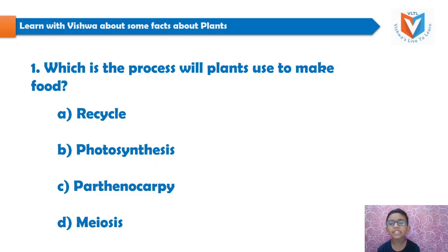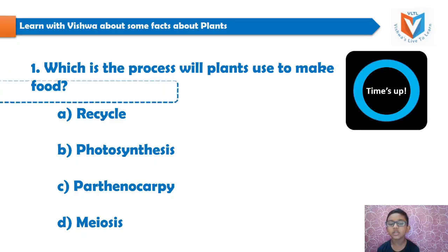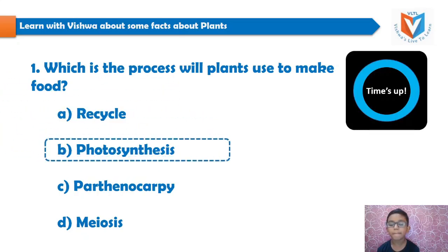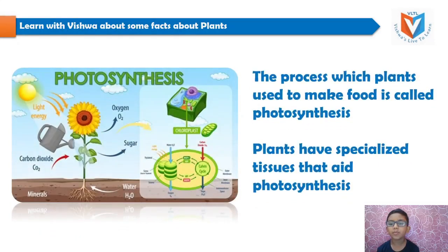Which is the process plants use to make food? Recycle, photosynthesis, parthenocarpy, meiosis. Your 5 seconds time starts now... time's up. And the answer is photosynthesis. The process which plants use to make food is called photosynthesis. Plants have specialized tissues that aid photosynthesis.